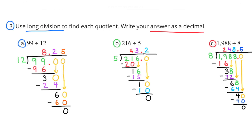B. 216 divided by 5. How many times does 5 go into 21? It goes in 4 times. 4 times 5 is 20, and 21 minus 20 is 1. I bring down the 6 in the ones place. How many times does 5 go into 16? 3 times. So I put the 3 in the ones place at the top. 3 times 5 is 15, and 16 minus 15 is 1. I make sure I put in my decimal point and bring down the 0 in the tenths place. How many times does 5 go into 10? It goes in twice. 2 times 5 is 10, and 10 minus 10 gives a remainder of 0. So 216 divided by 5 is 43 and 2 tenths.